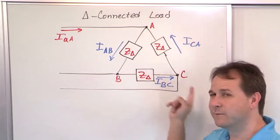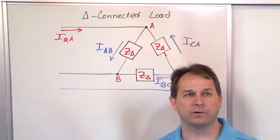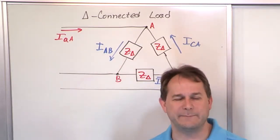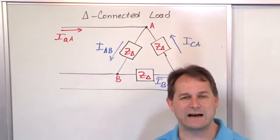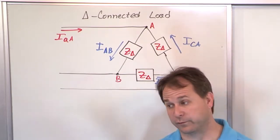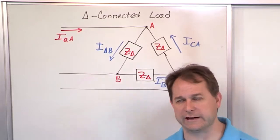If this one, instead of 1 plus J2, were 1 plus J3 or 1 plus J5 or 2 plus J1 or something different than the other two, this circuit will be unbalanced, and this conversion to a Y load equivalent is not going to be as easy. You can still do it, but it's not going to be as easy. In this course, we're going to assume all of the loads are balanced. We're doing balanced three-phase circuit analysis.